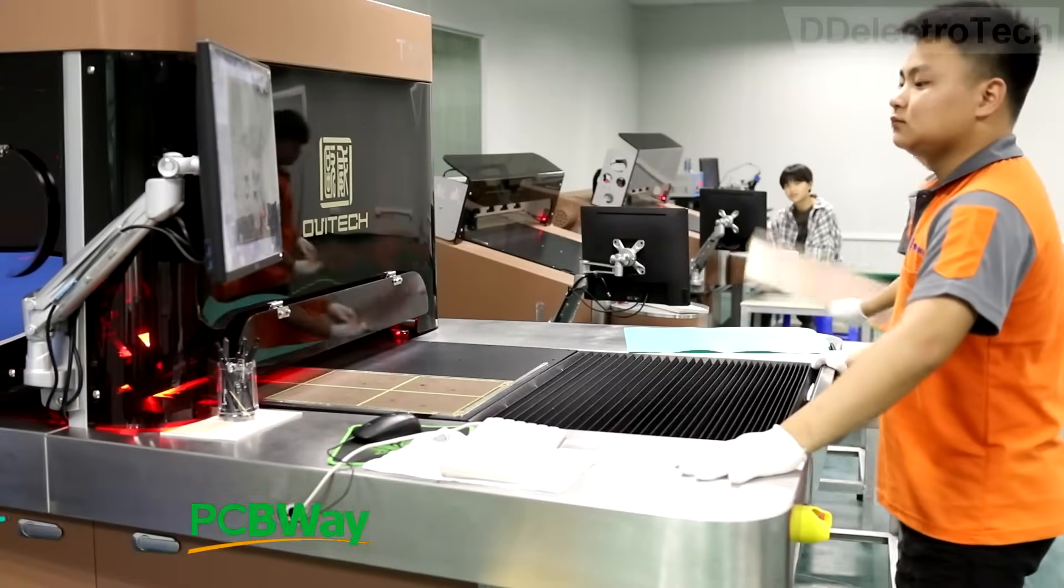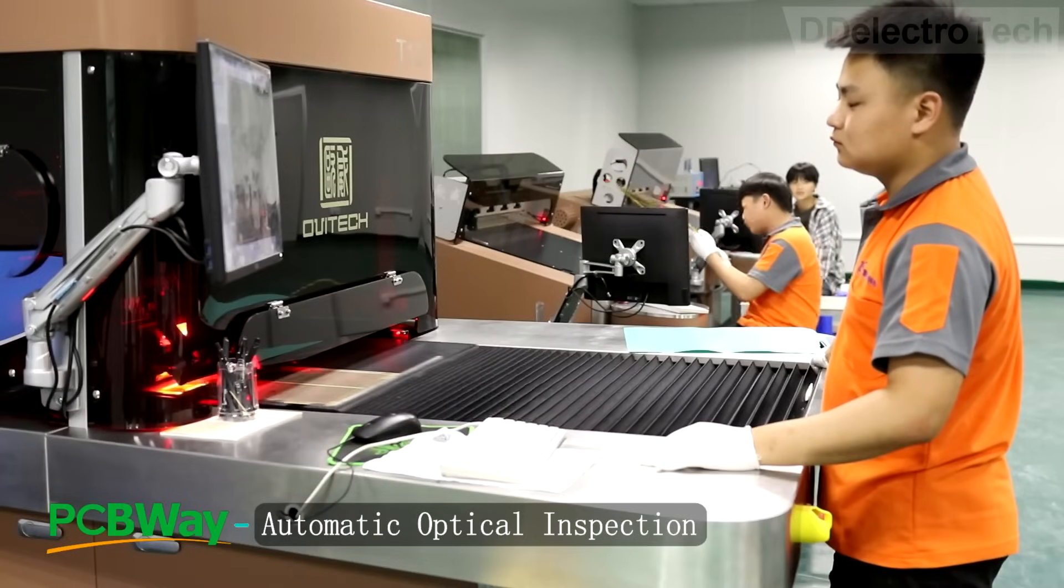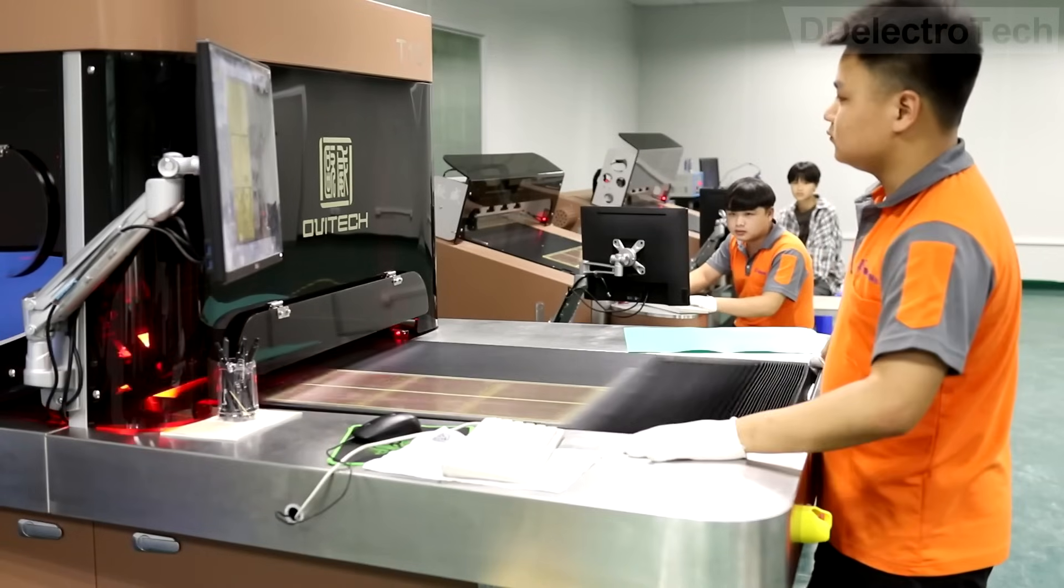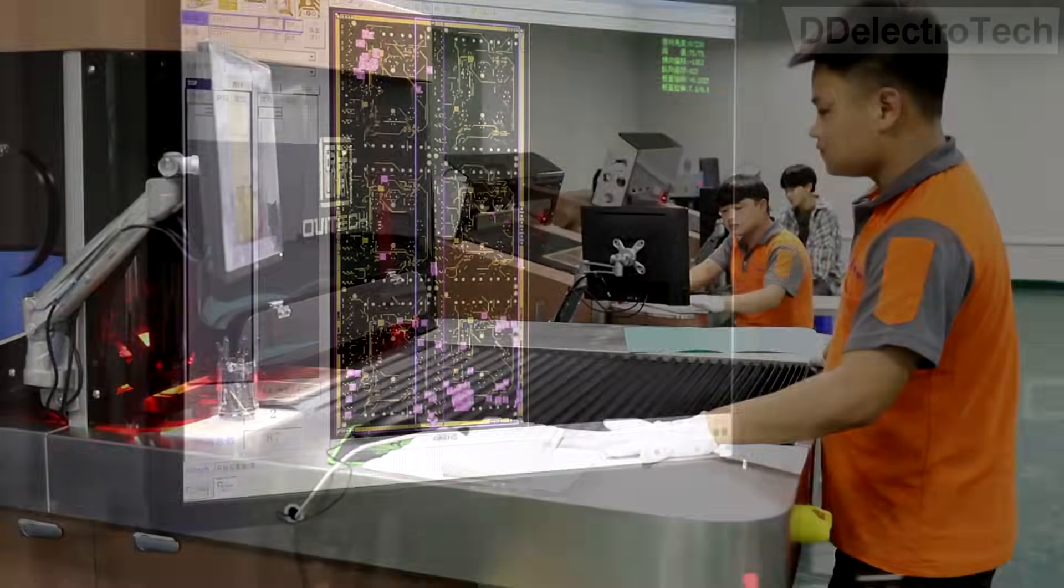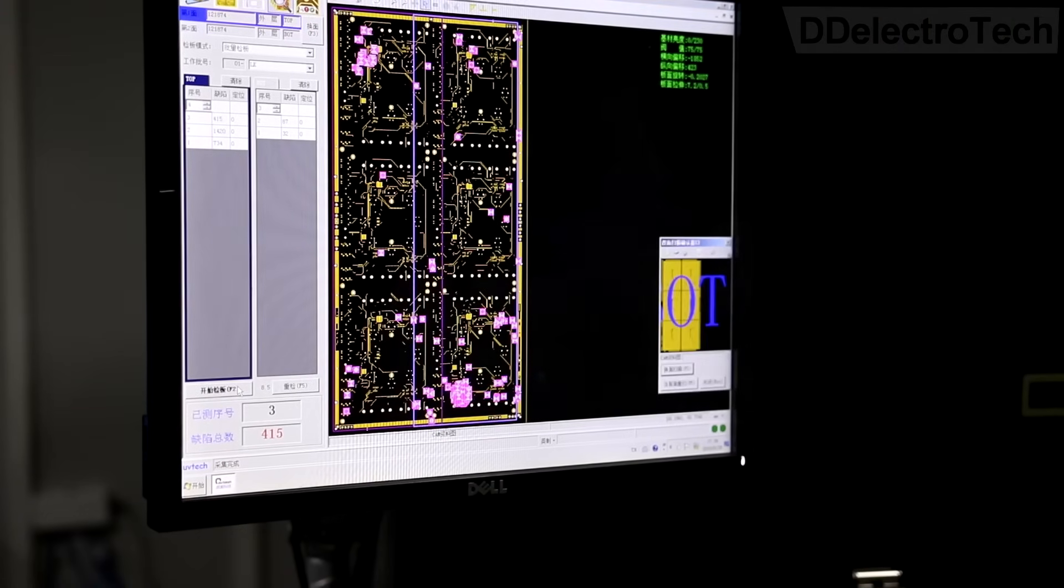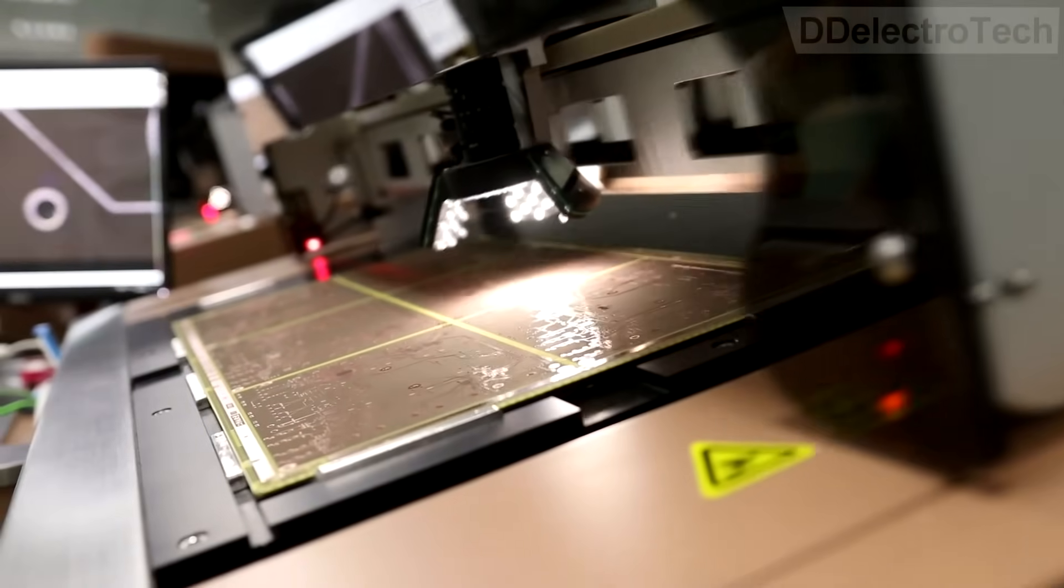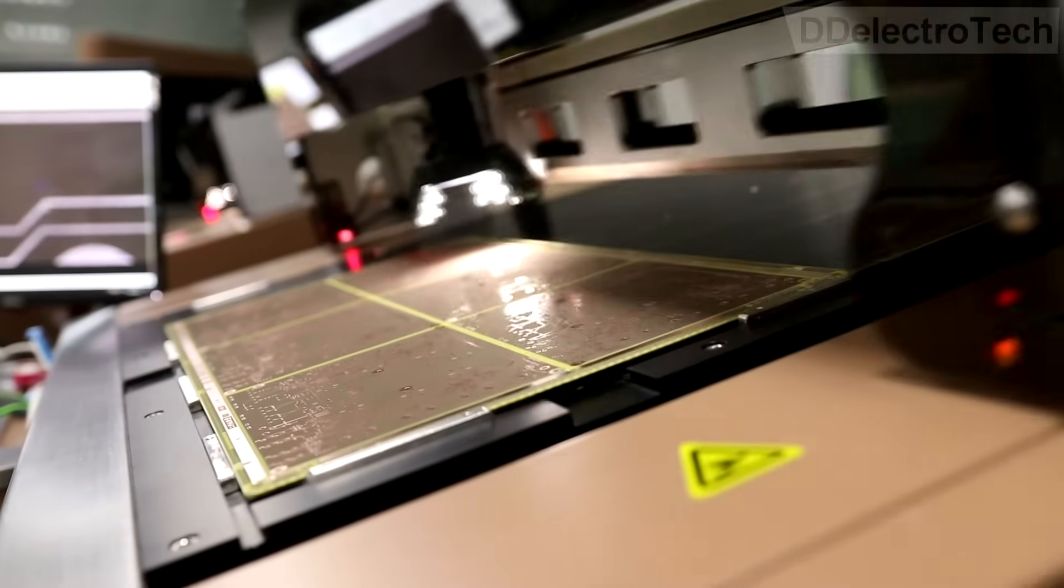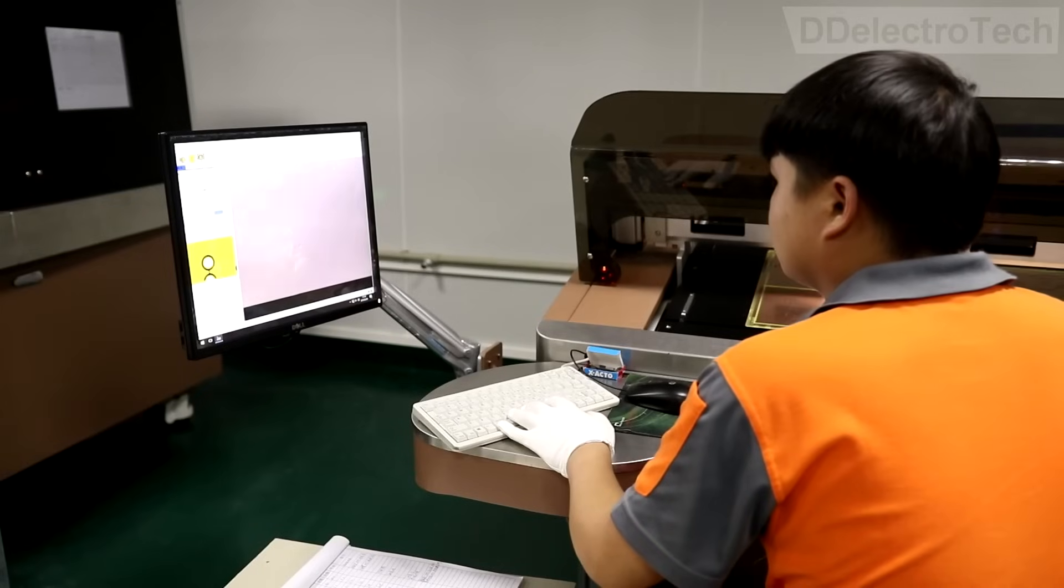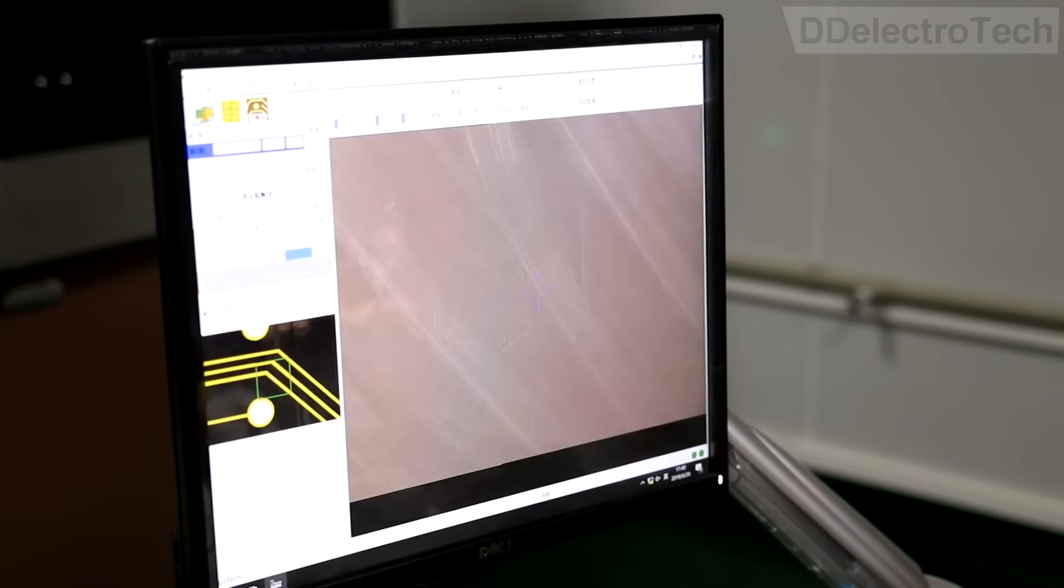Then the boards come for automatic optical inspection, or AOI. This machine enables fast and accurate inspection of PCBs to ensure that the quality of products leaving the production line is high and the items are built correctly and without manufacturing faults. When detecting circuits, the machine automatically scans the PCB through the camera, collects images, and compares the tested solder joints with the qualified parameters in the database.